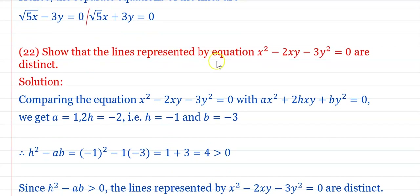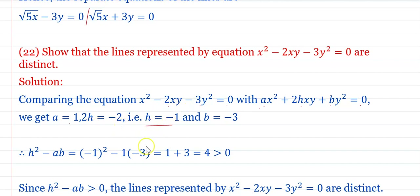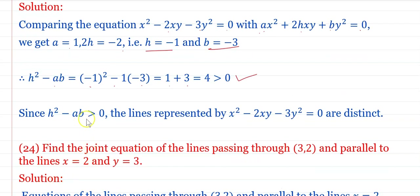Show that the lines represented by x² − 2xy − 3y² = 0 are distinct. For distinct lines, h² − ab > 0. Comparing: a = 1, 2h = −2 so h = −1, b = −3. Then h² − ab = (−1)² − 1×(−3) = 1 + 3 = 4 > 0. Since h² − ab is positive, the lines are distinct.